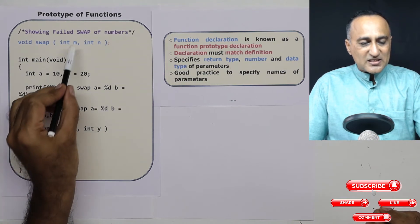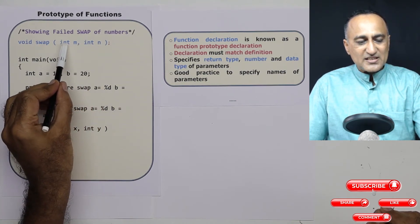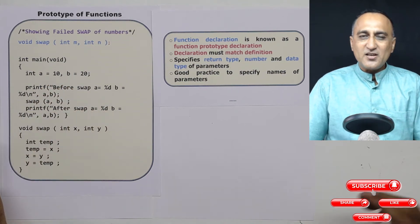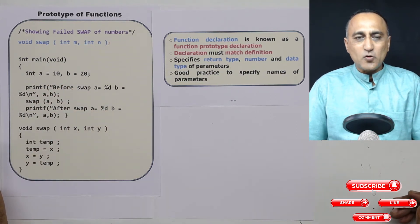It is this M and N is optional, I could have just said int comma int, but it's good to specify the names. So it helps you make the code more readable.